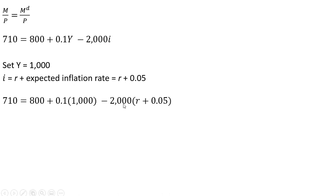So it's going to be 2,000 here, or minus 2,000, multiplied by the real interest rate plus the expected inflation rate. And now we're going to solve this equation for R. So 0.1 times 1,000 is 100. The hundreds cancel. And 710 and the 800 gives us the minus 90. And now dividing through, we get a real interest rate of 4.5%.